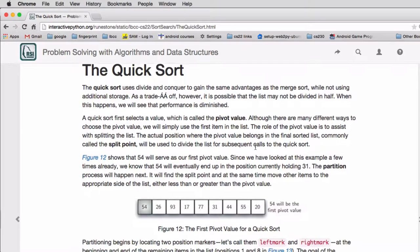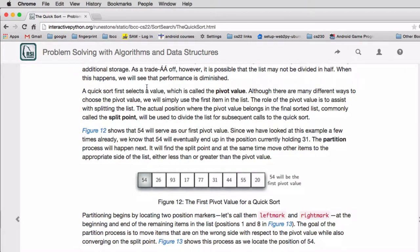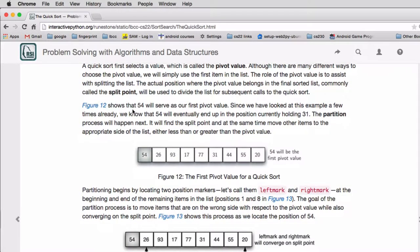So the way it works is you pick a value, not a place in the list, but an actual value. That's called the pivot value. And there's different ways of choosing a pivot. What they do in this chapter, they just choose the first item in the list.